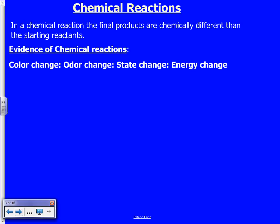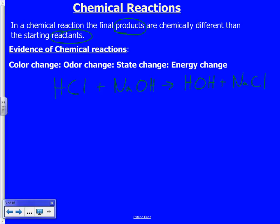In a chemical reaction, the final products are chemically different from the starting reactants. These are two terms you'll need to know: products and reactants. In a chemical reaction, the reactants are the things that react, and the products are the things that are produced.